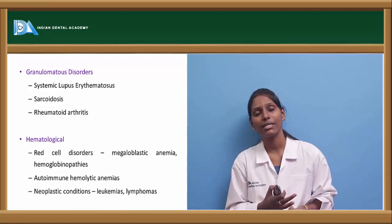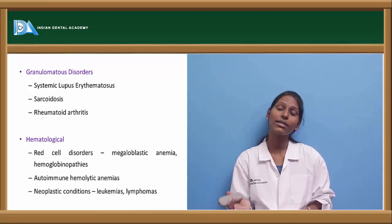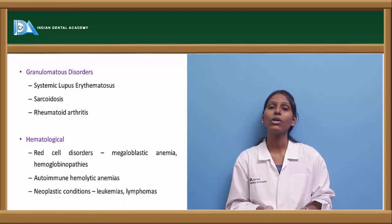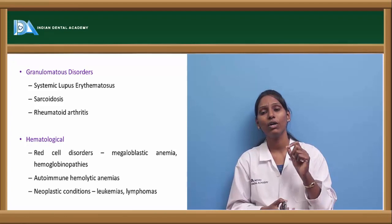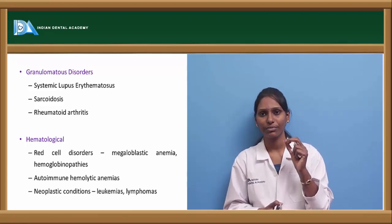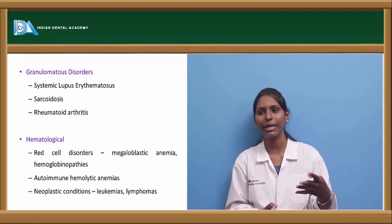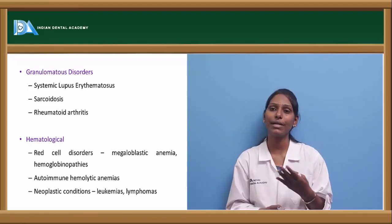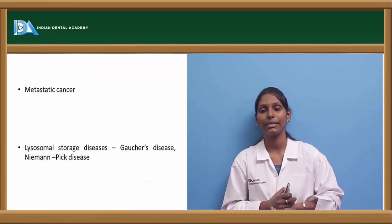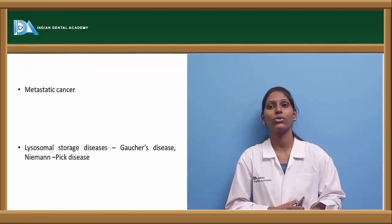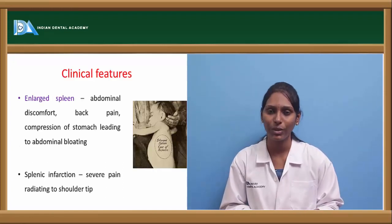Granulomatous disorders — especially sarcoidosis, SLE (systemic lupus erythematosus), and rheumatoid arthritis — can also lead to splenomegaly. Hematological disorders, especially red cell disorders — megaloblastic anemia, hemoglobinopathies where RBCs are sequestered in the spleen — lead to splenomegaly. Any autoimmune hemolytic anemias, neoplastic conditions such as leukemias and lymphomas, metastatic cancer, and lysosomal storage disorders such as Niemann-Pick disease and Gaucher's disease also cause splenomegaly.